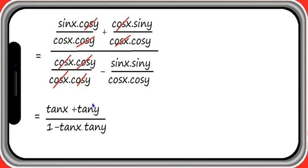Similarly, it is possible to get tan of x minus y. In this formula, if we just substitute y by minus y, you will get the result for tan of x minus y.